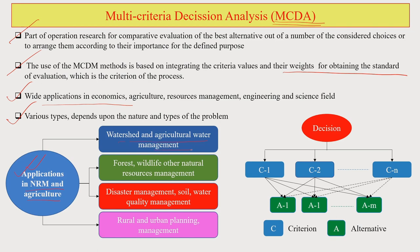Watershed and agriculture water management is one area where MCDA can be applied quite extensively. Second is forest, wildlife, and other natural resources management. Then disaster management, soil and water quality management, and rural and urban planning. You can see how many different areas MCDA can help us reach a decision to identify the best alternative for our purpose.